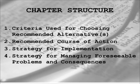I want to quickly go over one kind of chapter structure. As you move into Chapter 3, you want to talk about the criteria you're going to use for choosing your recommended alternative — the specific solution you've chosen among all the ones you generated. You then want to talk about your specific recommended course of action, your strategy for implementing the solution, and finally a strategy for managing any foreseeable problems and consequences.